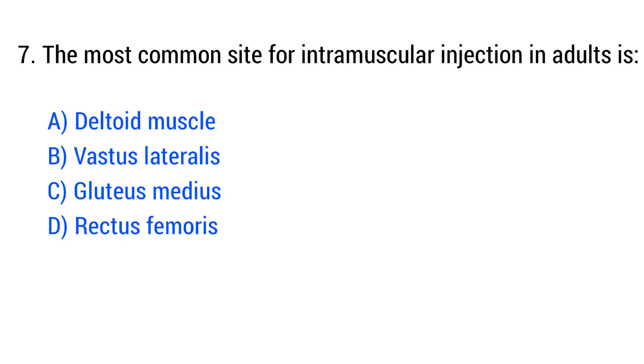Question number 7. The most common site for intramuscular injection in adults is? The right answer is Option A, deltoid muscle.